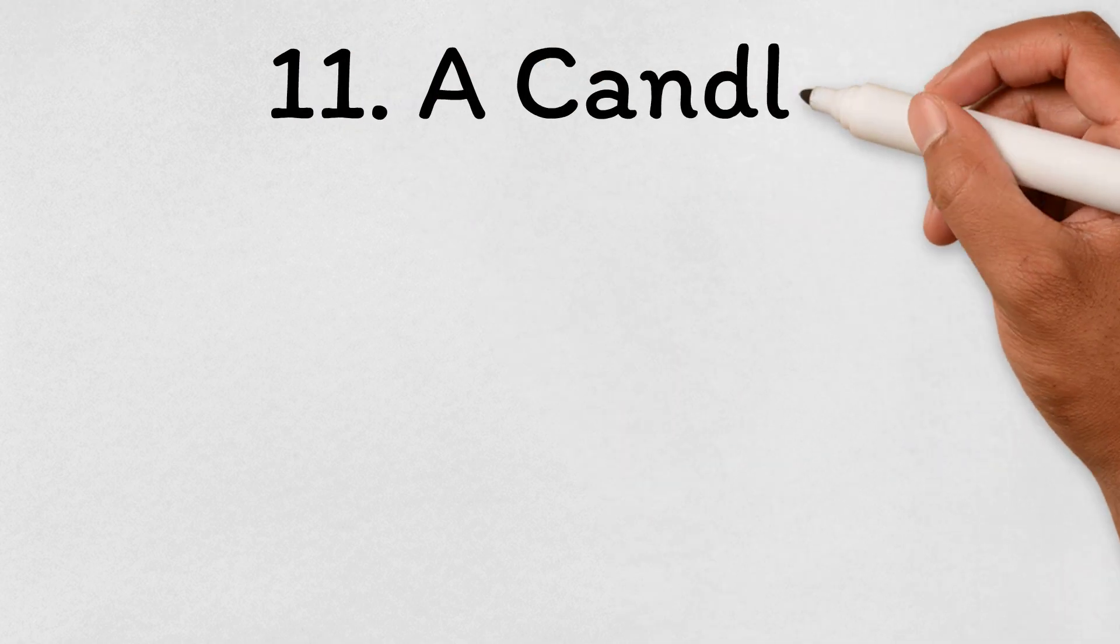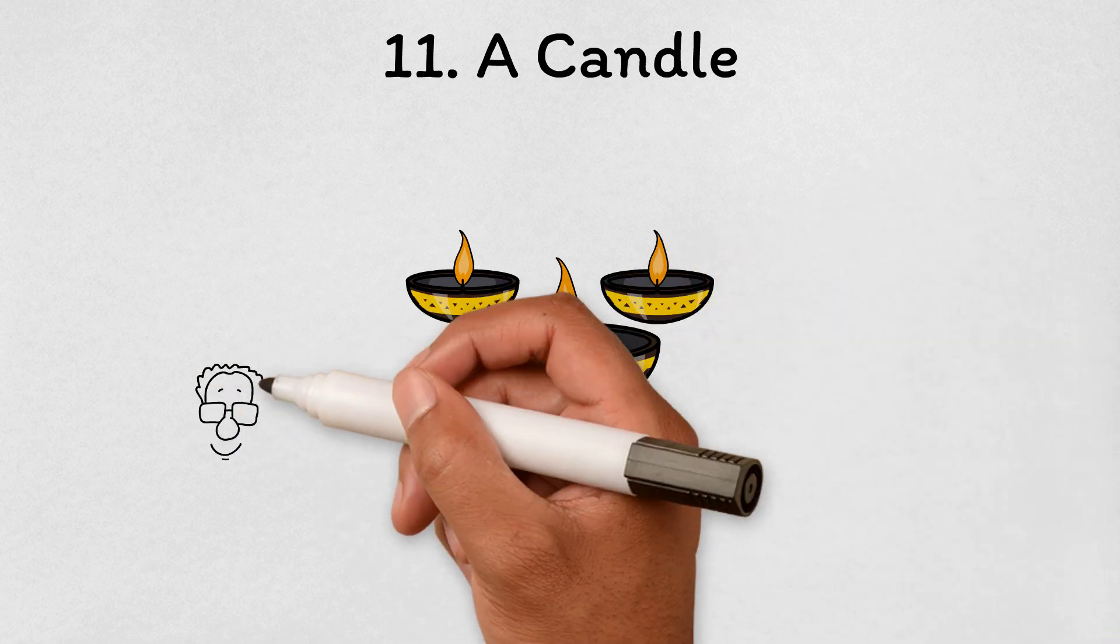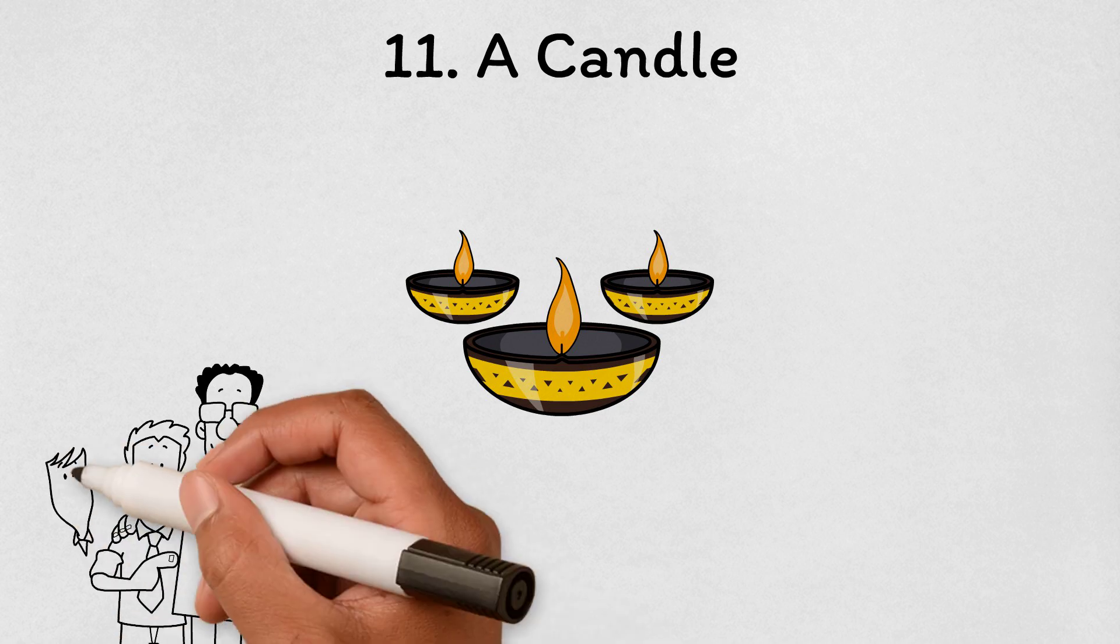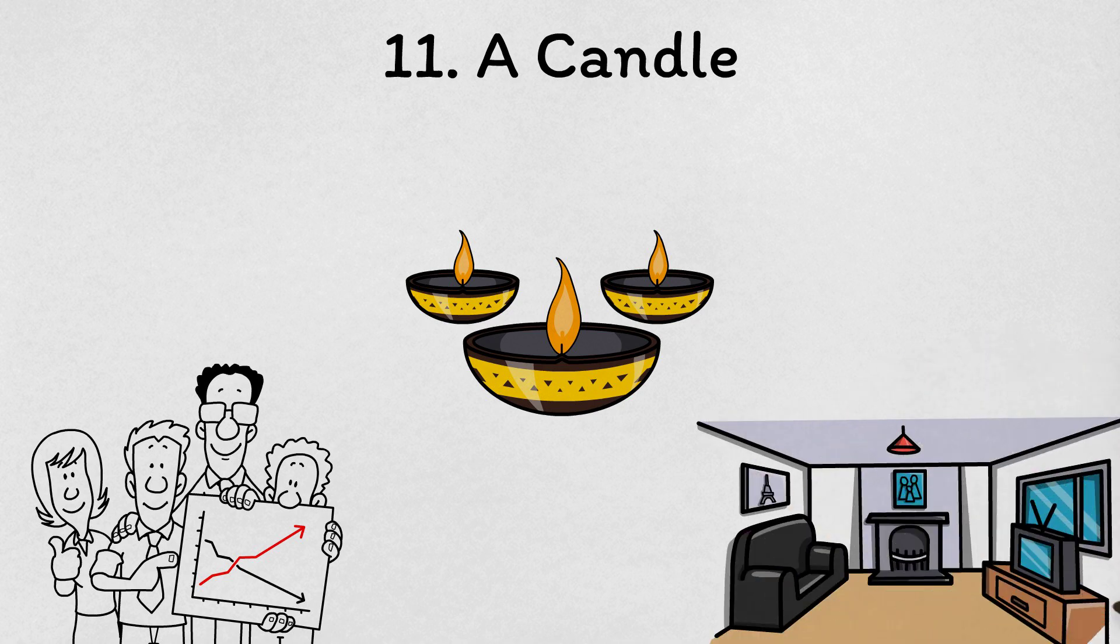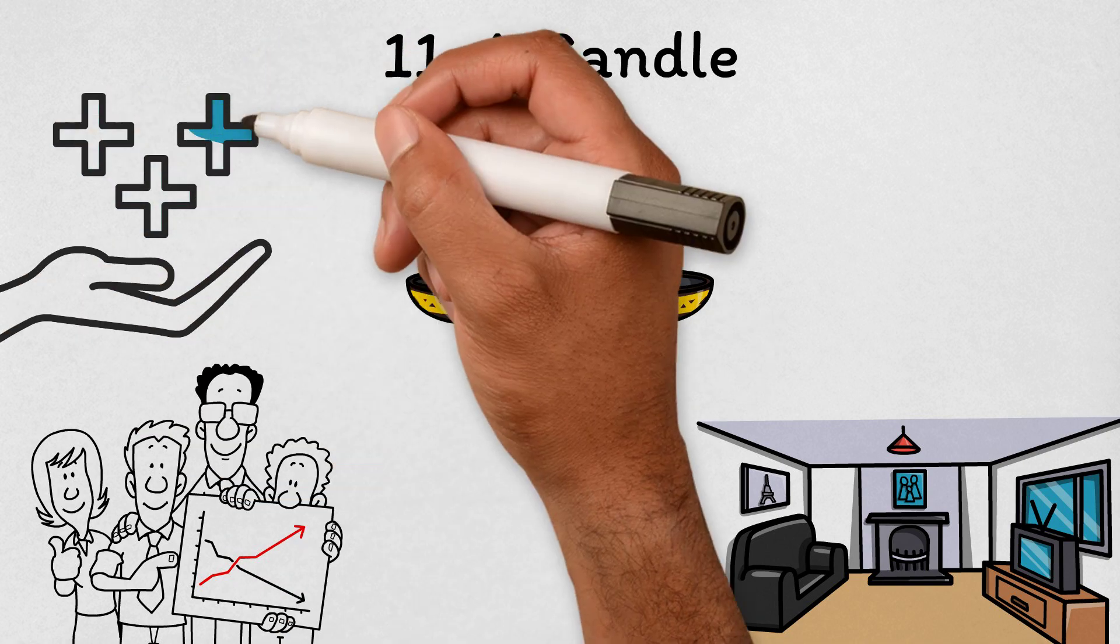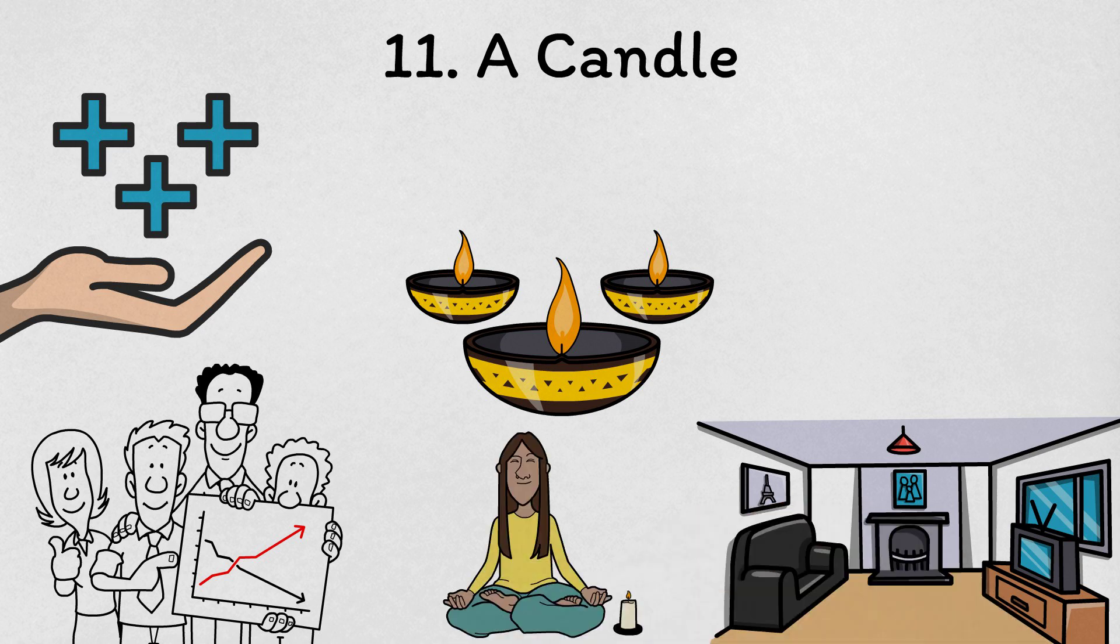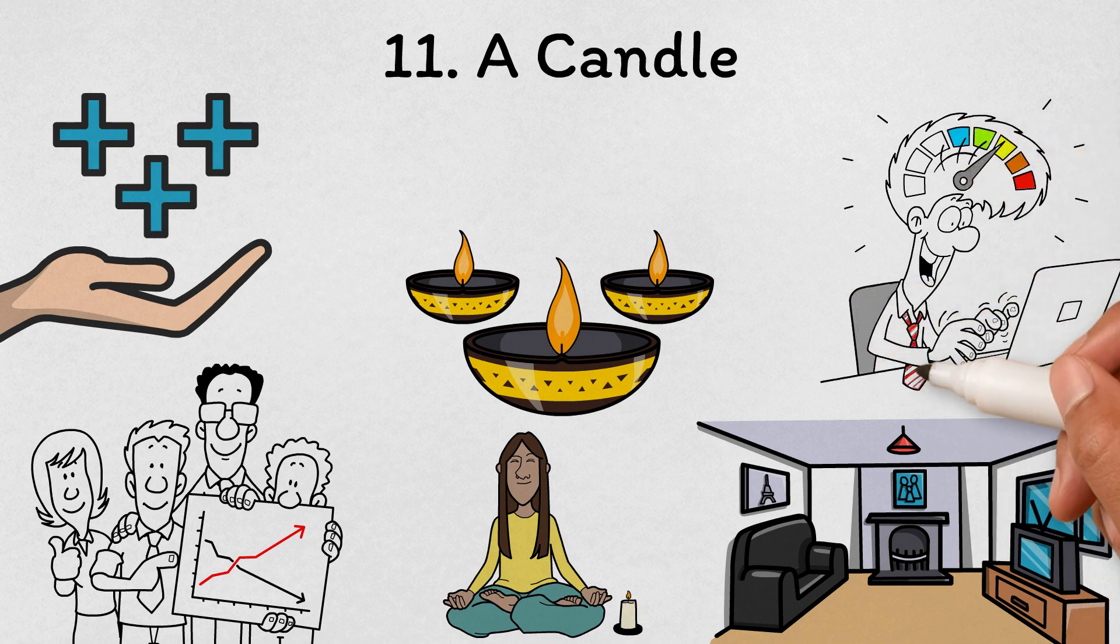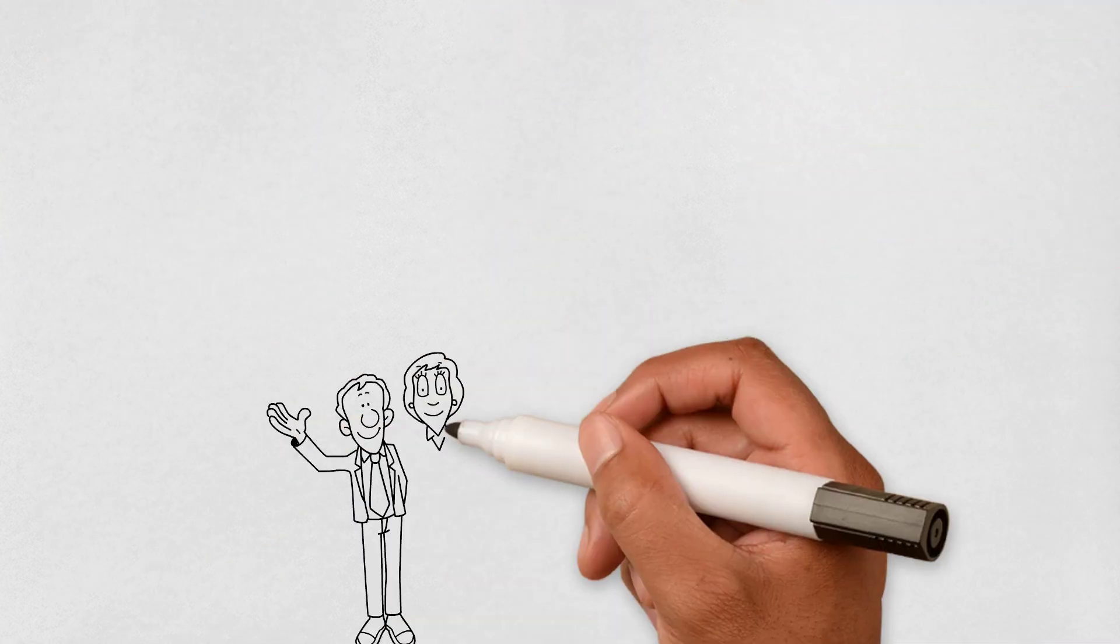A candle. Candles are often seen as just a decorative item, but they can have a significant impact on your mood and well-being. Whether you're looking to unwind after a long day, create a cozy atmosphere, or simply elevate your home decor, candles can help you achieve your desired ambiance. But did you know that certain scents can also have specific benefits? For example, lavender can promote relaxation and reduce stress, while peppermint can boost energy and improve focus. By selecting candles with the right scents, you can create a customized sensory experience that supports your mental and emotional needs. So light a candle and let the power of scent transform your space and your mood.